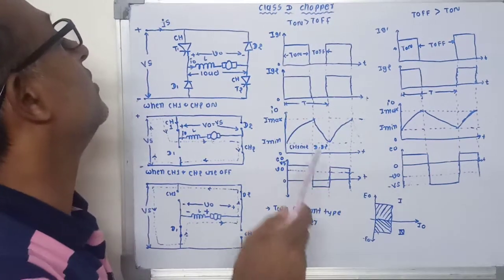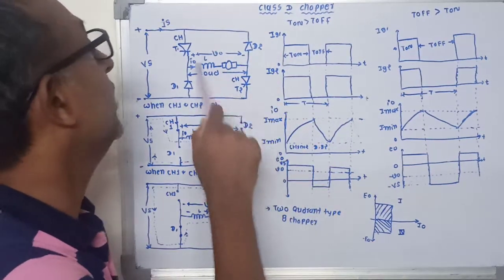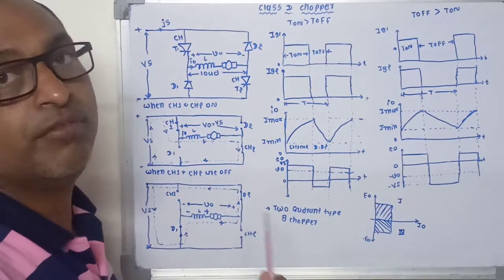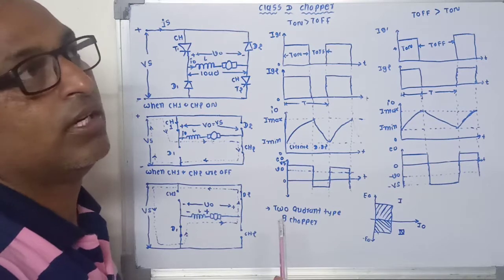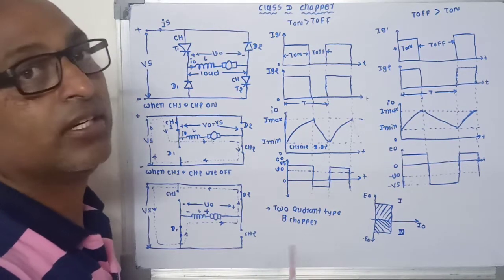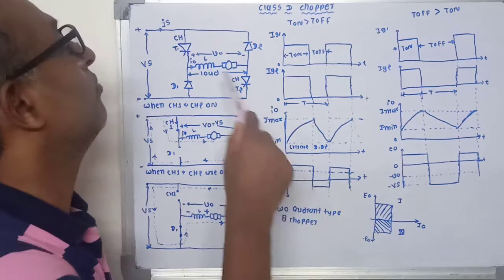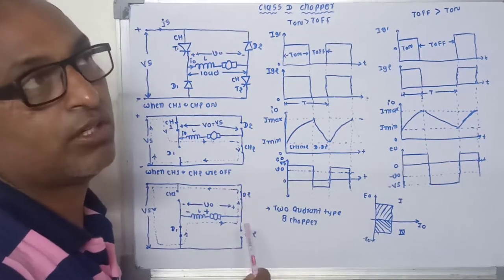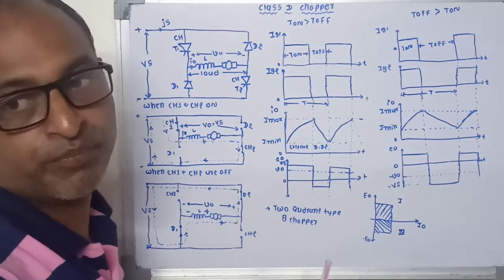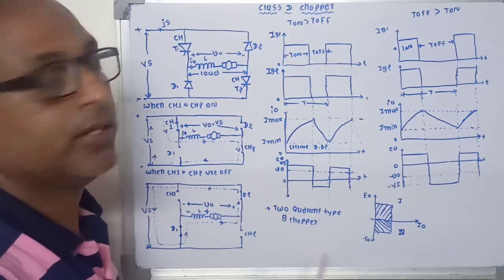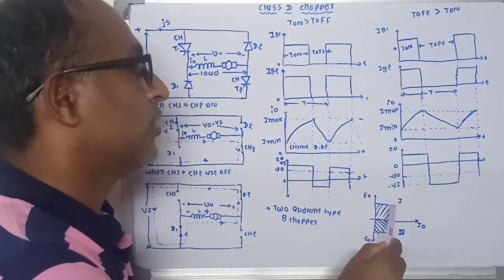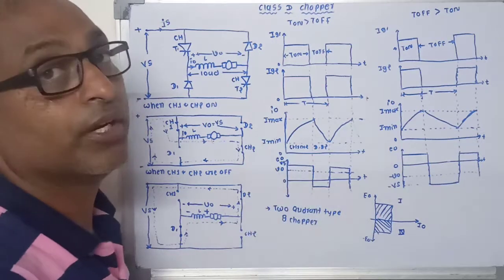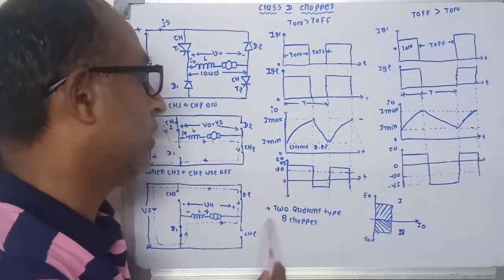This is the basic circuit of a Class D chopper. In this class, Class D type choppers allow power to flow either from load to source or from source to load. The operation of this chopper is confined to the first quadrant and fourth quadrant. This Class D type chopper is also known as a two-quadrant type B chopper.